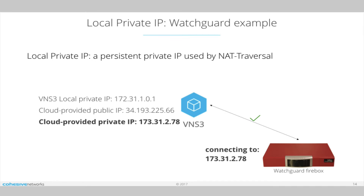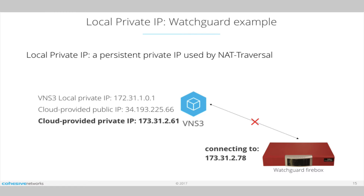Some boxes — an example is a WatchGuard Firebox — the WatchGuard Firebox has to know the IP address of the device that it's connecting to, not only the public IP but the private IP. So if you brought up a new VNS Cubed, the WatchGuard has to be configured with our local private IP.